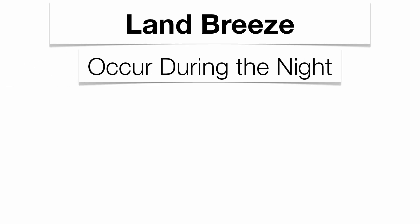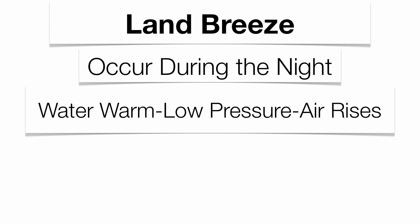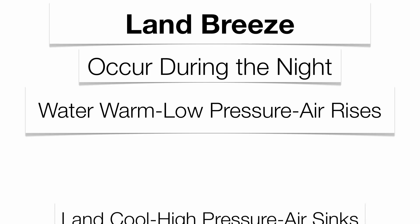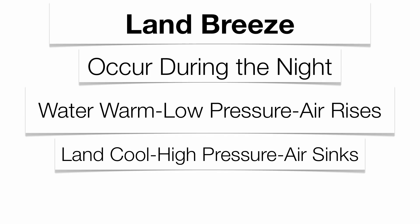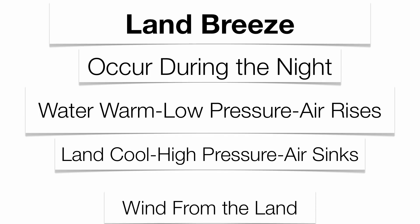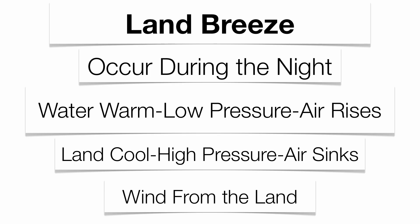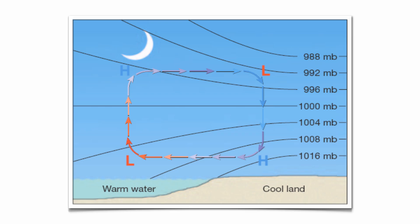At nighttime you get the exact opposite — a land breeze. Water has a high specific heat, so it heats slowly and cools slowly, remaining quite warm at night. Land has a low specific heat, heating quickly but also cooling off very quickly at night. Now the warm water has low pressure with air rising over it, and the cool land has higher pressure with air sinking. Winds blow from the land to the water — that's a land breeze. Everything is exactly reversed.